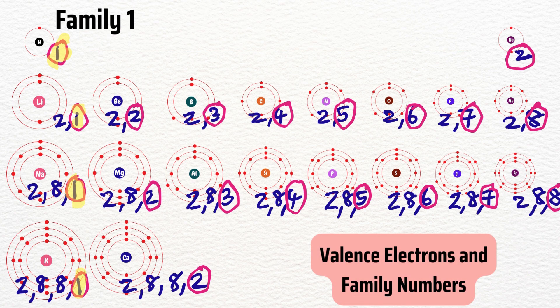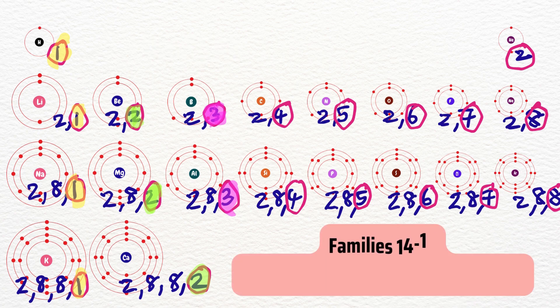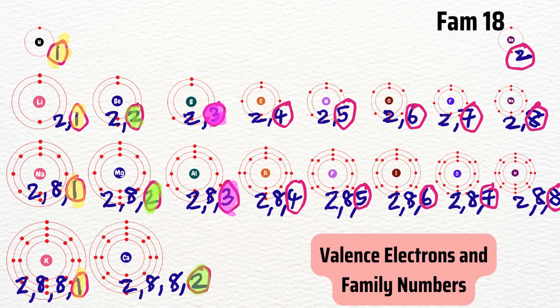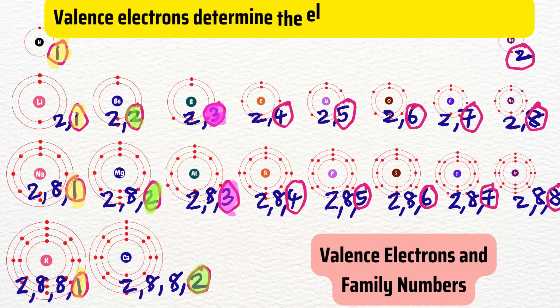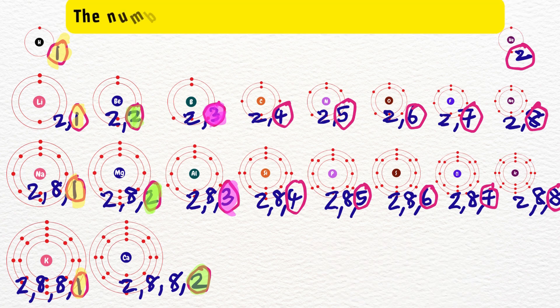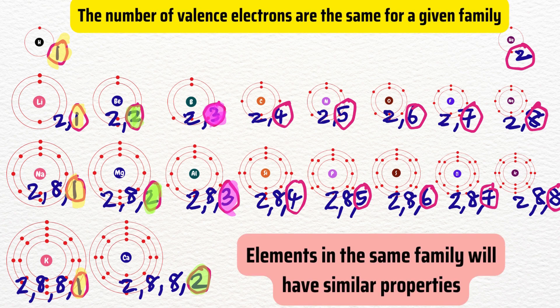For example, family 1 has 1 valence electron. Family 2 has 2 valence electrons. Family 13 has 3 valence electrons. Family 14 through 18 would have 4, 5, 6, 7 and 8 valence electrons, except for helium in family 18 which has 2 valence electrons. Valence electrons are important because they determine the elements chemical behavior. Since the number of valence electrons are the same for a given family, elements in the same family will have similar properties.